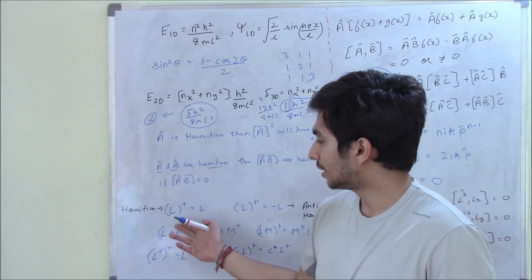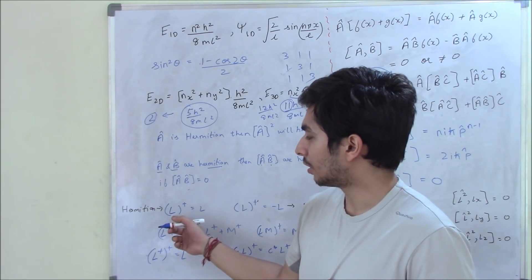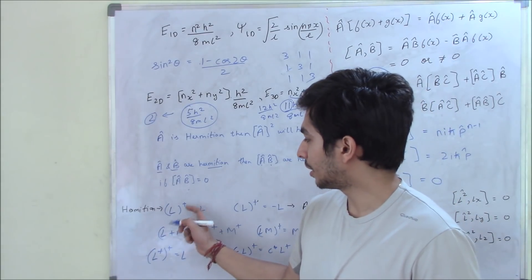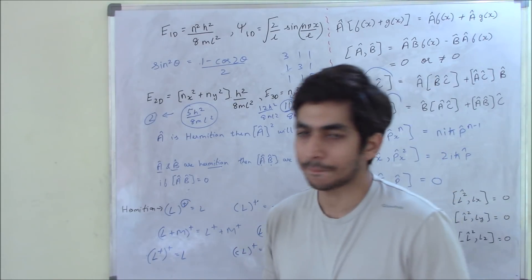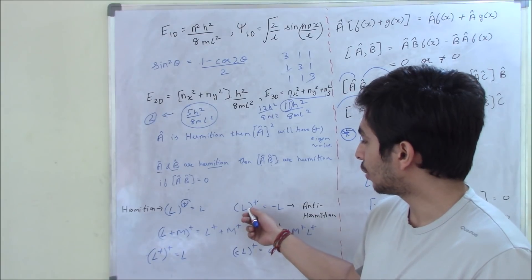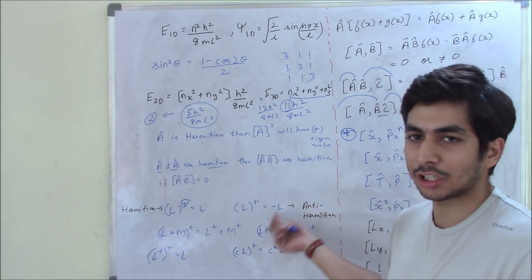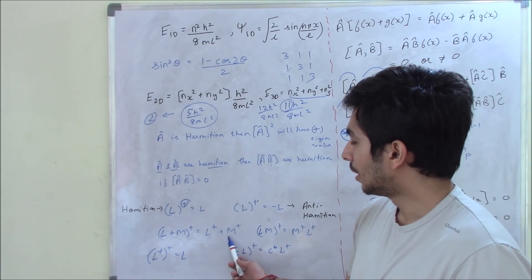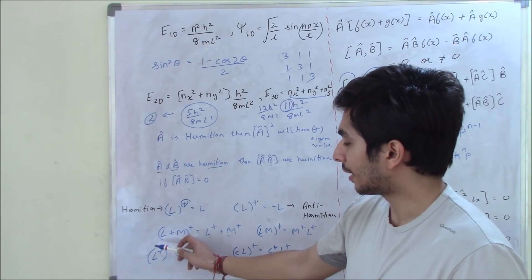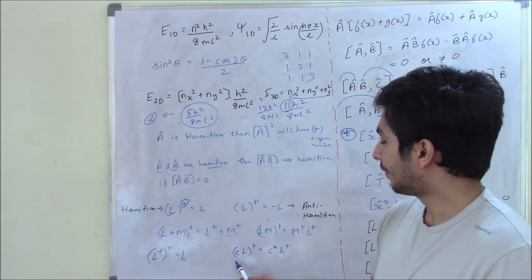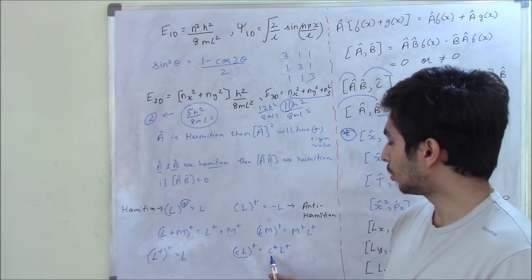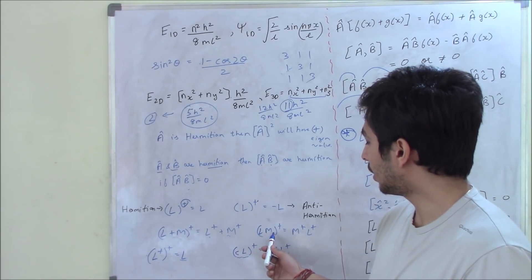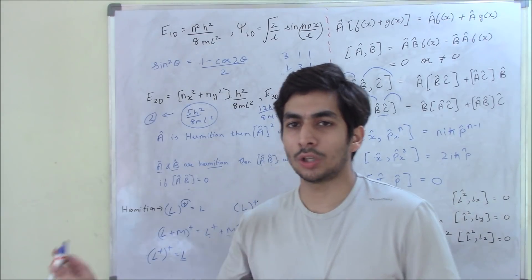Related to Hermitian operators is the adjoint. If operator L dagger equals L, it is Hermitian. If L dagger equals −L, it is anti-Hermitian. Key adjoint identities: (L + M)† = L† + M†; (L†)† = L; (cL)† = c*L†; and (LM)† = M†L†.